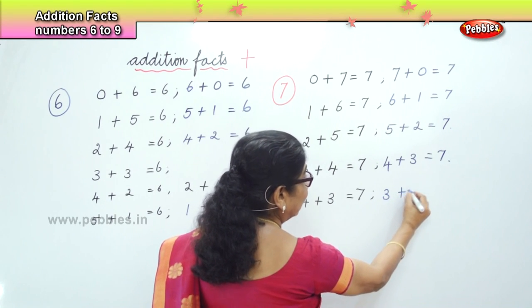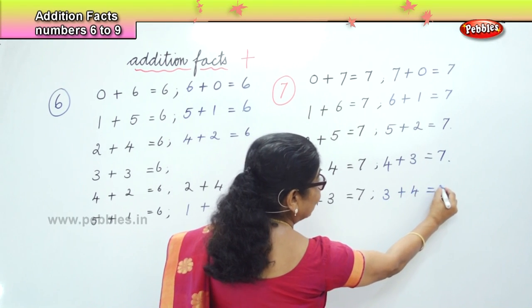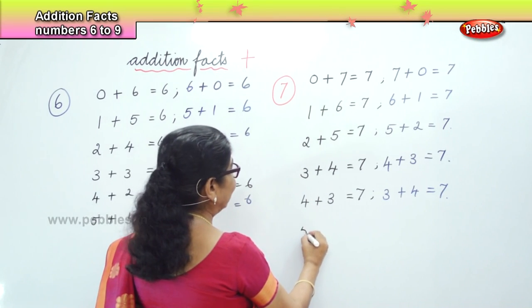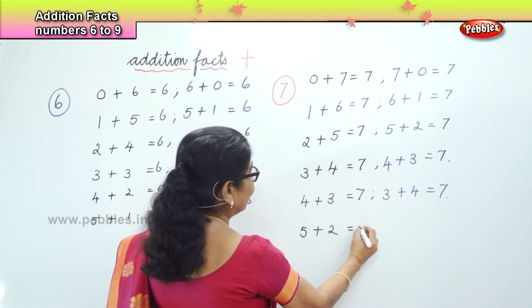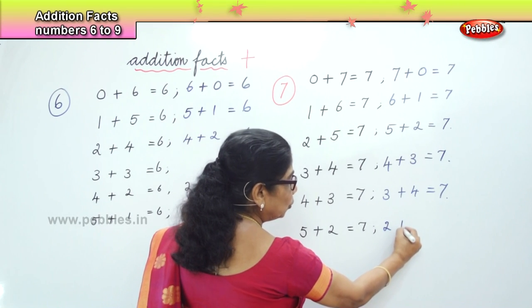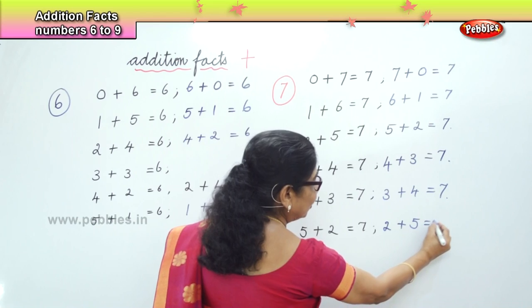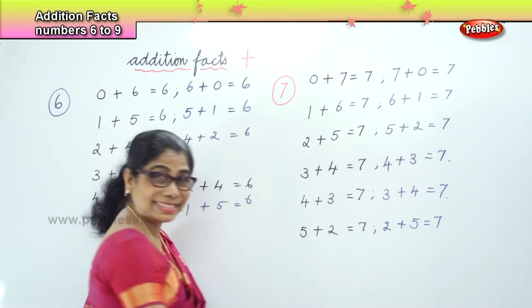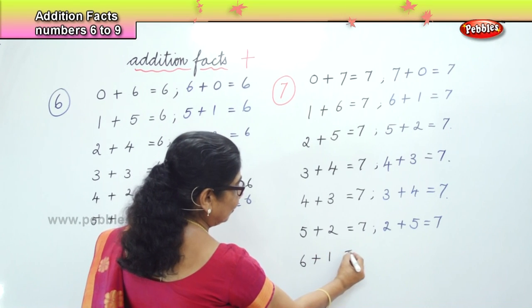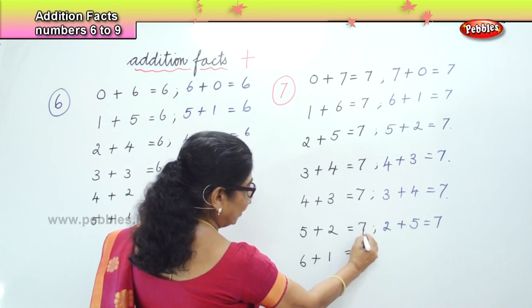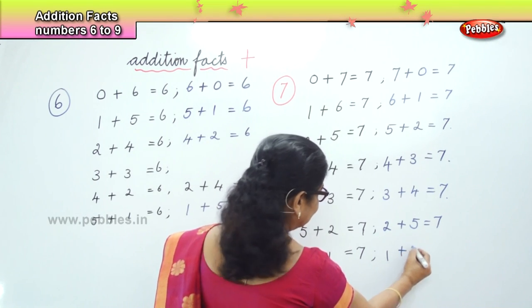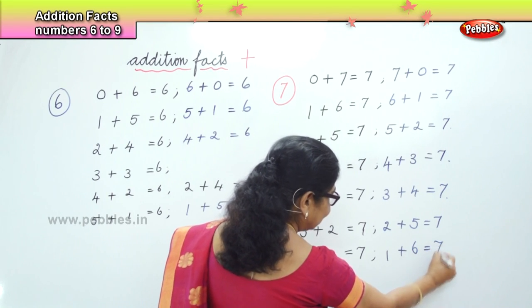What will be the next? 5. 5 plus 2 equal to 7. And the reverse: 2 plus 5 equal to 7. Then 6 plus 1 equal to 7.